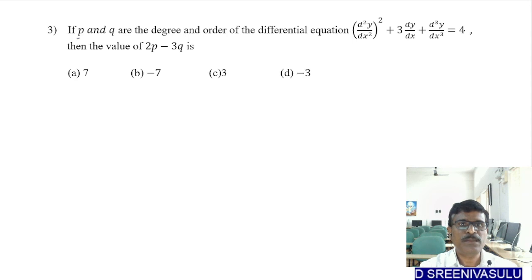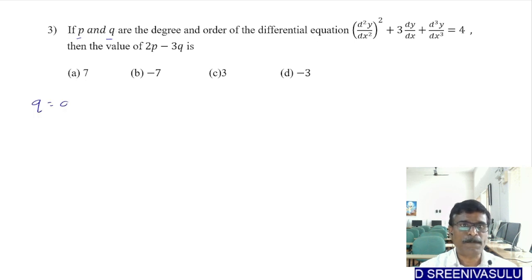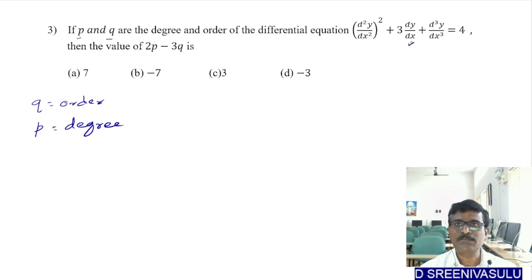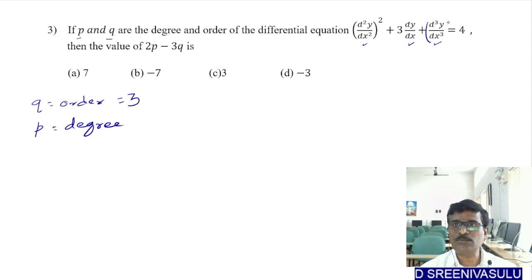Question number 3: If p and q are the degree and order of the differential equation (d²y/dx²)² + 3·dy/dx + d³y/dx³ = 4, find the value of 2p − 3q. Here p is degree and q is order. The highest derivative is d³y/dx³, so the order q = 3. The power of the highest-order term is 1, so degree p = 1.